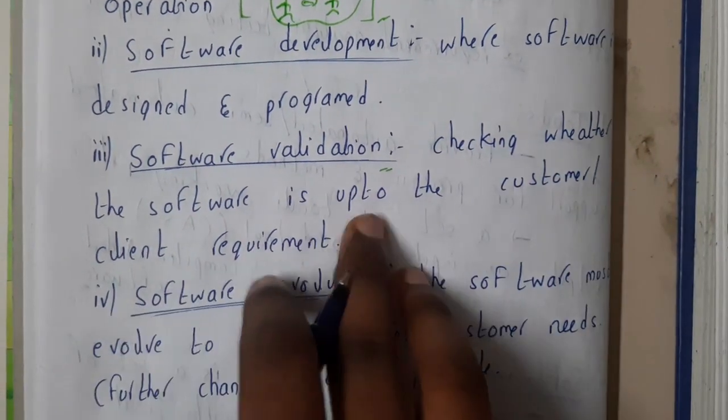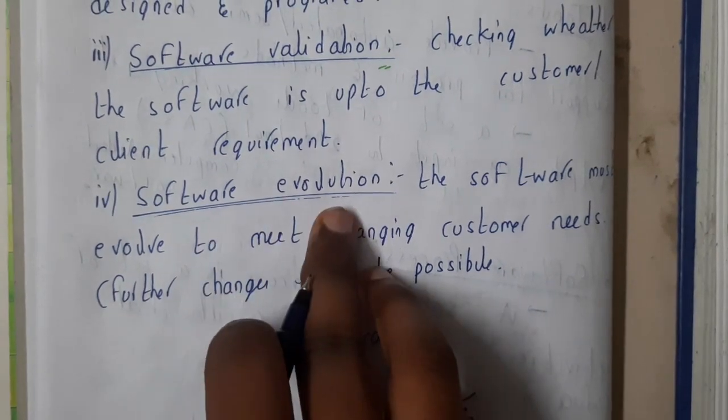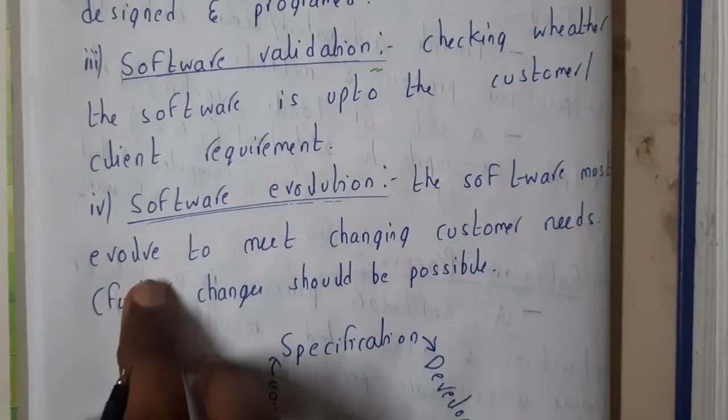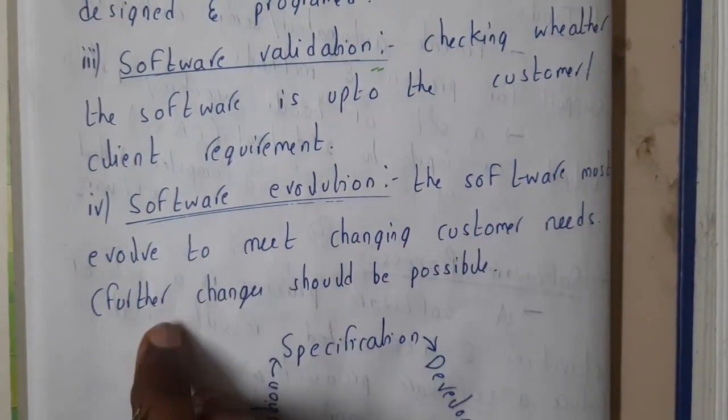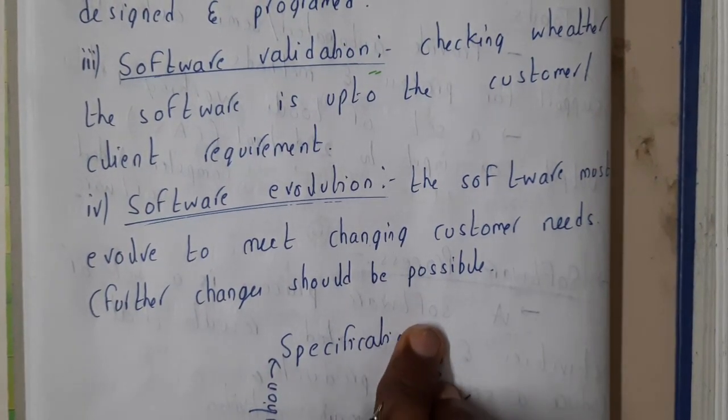Then software evolution: the software must evolve to meet changing customer needs. Future changes should also be possible. So basically you should remember one thing: the technologies that we are using today may not be used tomorrow.